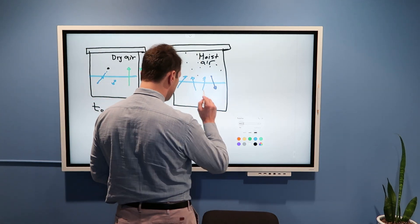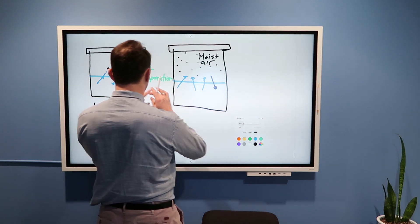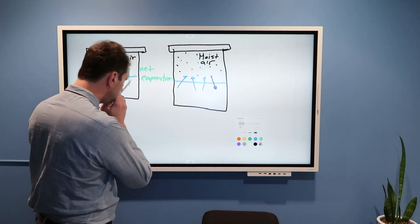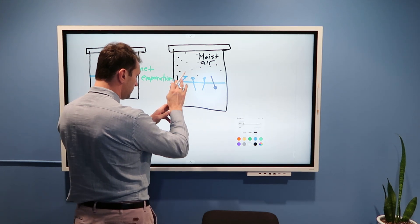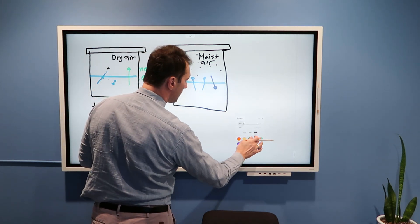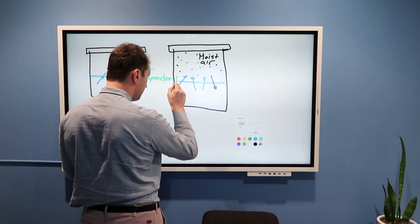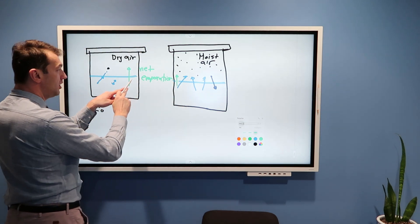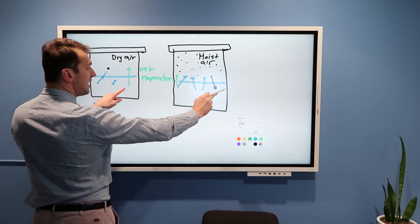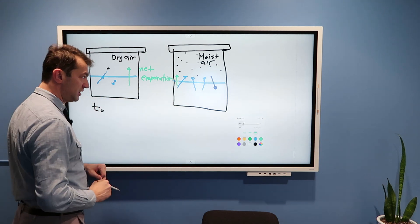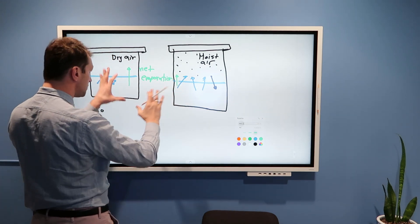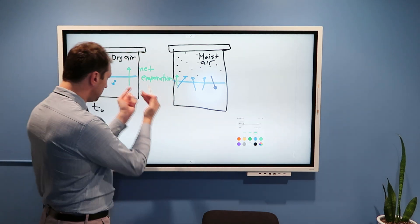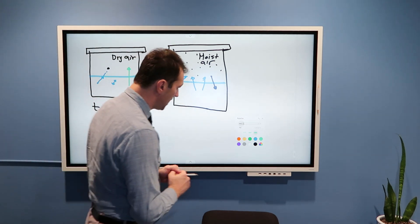So, I could also say I have net evaporation, but in this case, net evaporation, this arrow for net evaporation should be smaller than that arrow because now I also have some condensation that is happening. So, while overall there is net evaporation not at a rate that I had here.